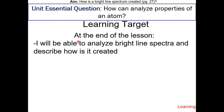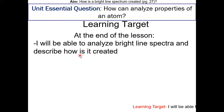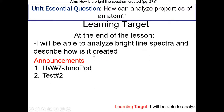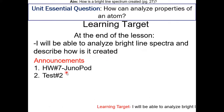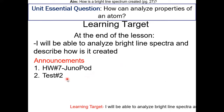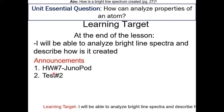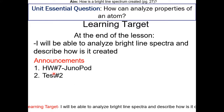Learning target: at the end of the lesson, I will be able to analyze bright light spectra and describe how it is created. The homework number seven is a Junipad based off of this lesson. The second exam will be on the atomic theory unit, so there will be one more PowerPoint before that exam.